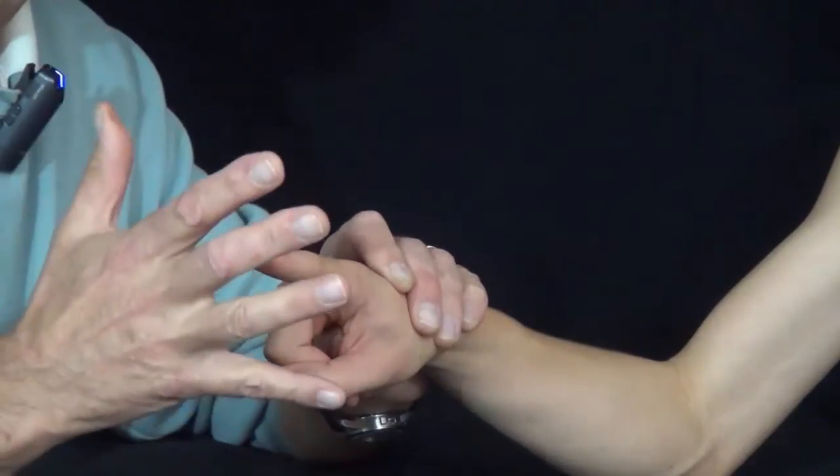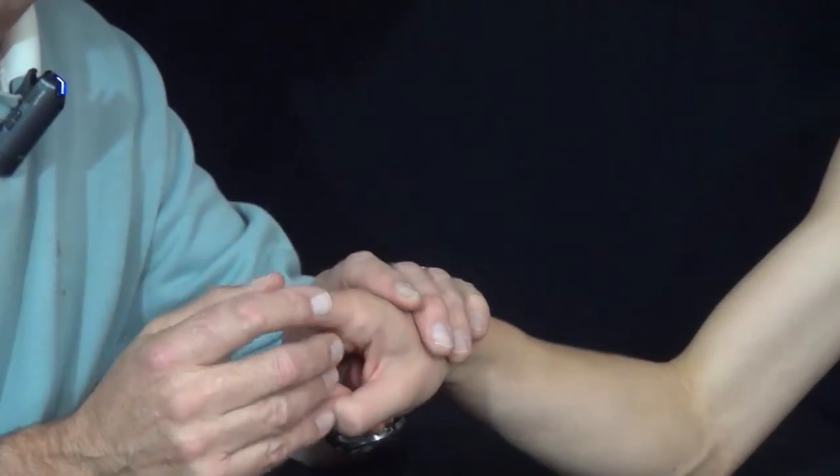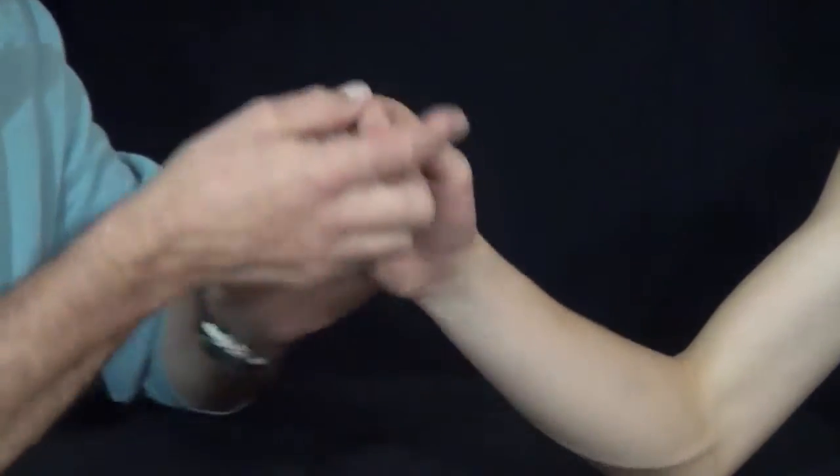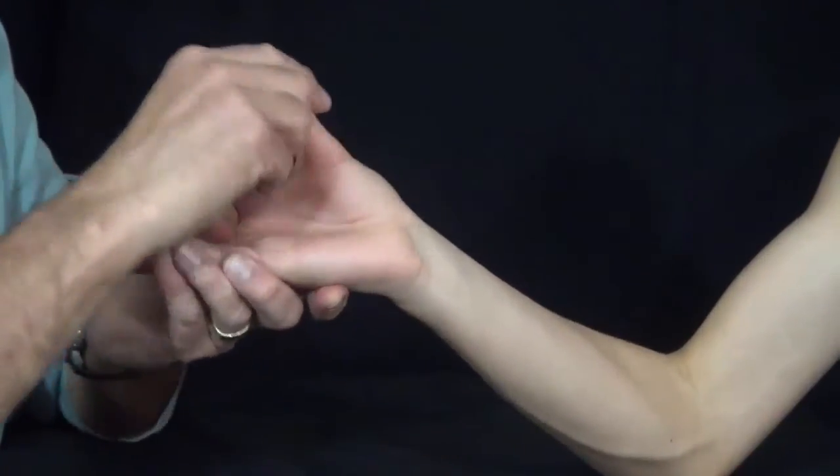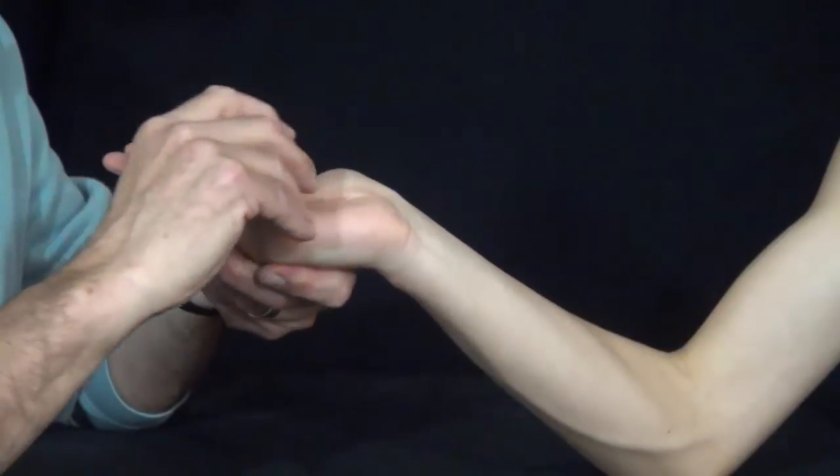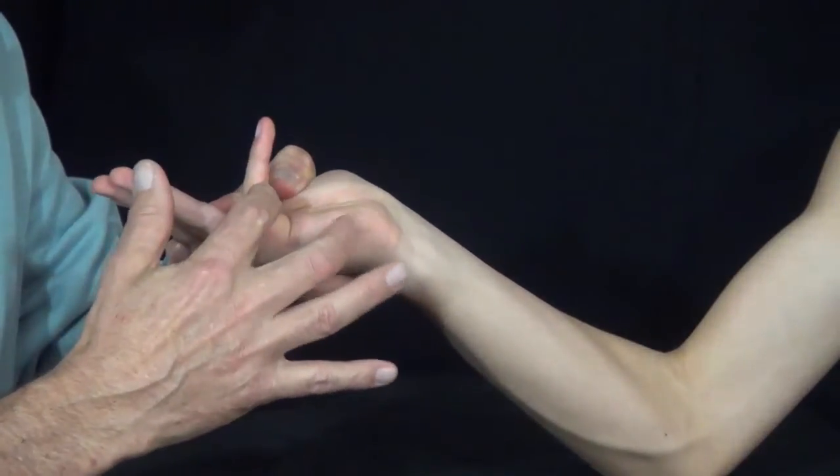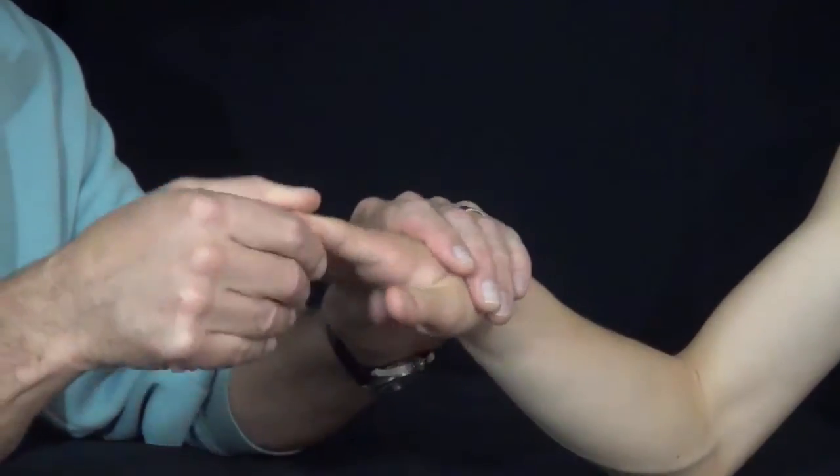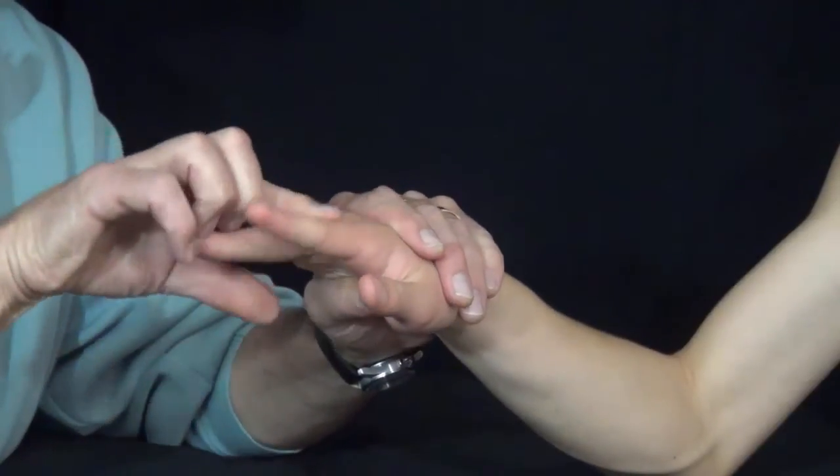So, a simple motor examination, a quick motor examination would consist of the following. Levi, hold your thumb just like this. Thank you. Bring your small finger. Hold it like that. Thank you. Take this right here. Hold it there. Don't let me move it. Don't let me move it. Don't let me move it.